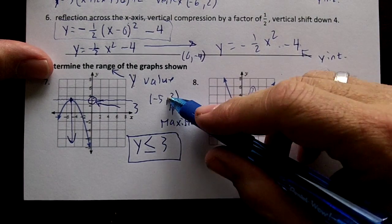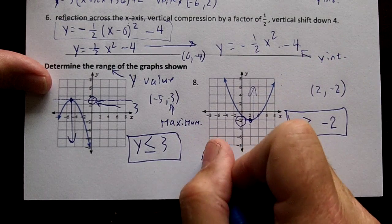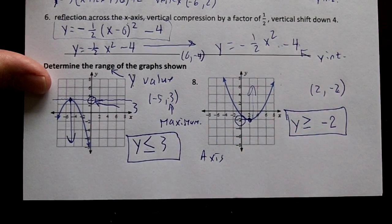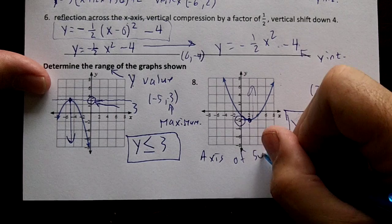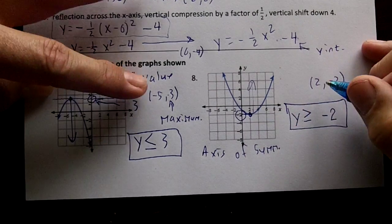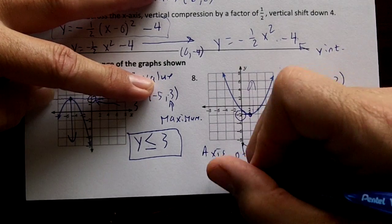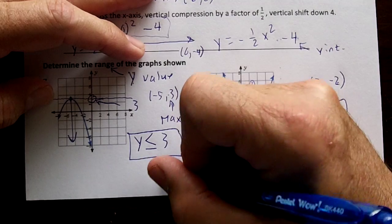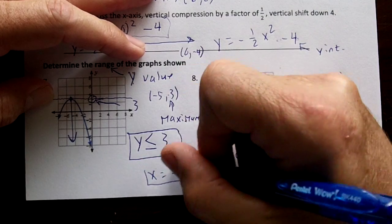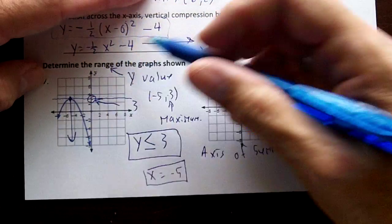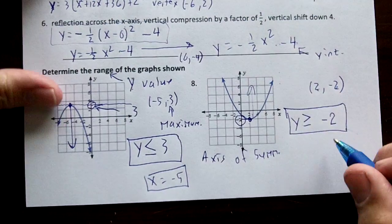And just for instance, this is our vertex right here. Just a little added information. Our axis of symmetry is going to be the x value in your vertex. So on this one right here, your axis of symmetry is x equal negative five. That means if you draw a line through negative five and fold it over, it matches up.